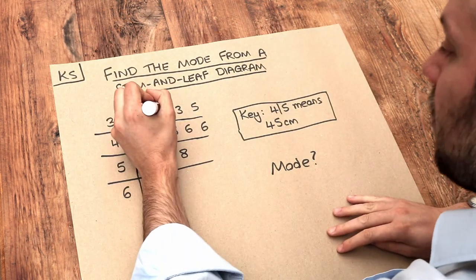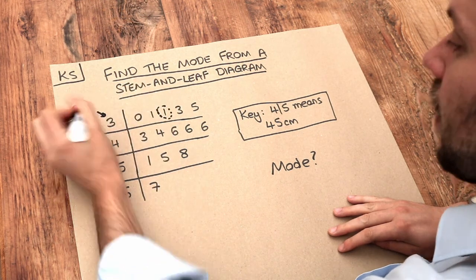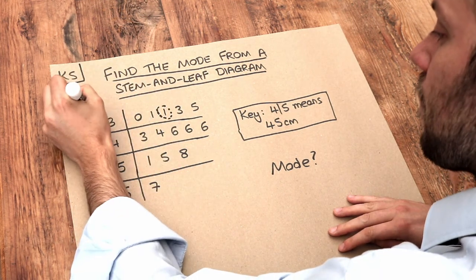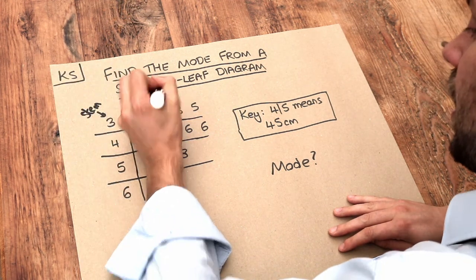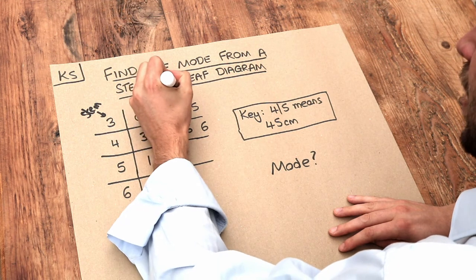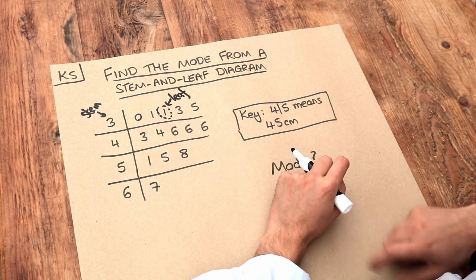If we had a value, say here, remember that this value on the left is the stem, which is the first digit of the number we're interested in, and these numbers over here, they're known as the leaves, and that gives us the second digit of each number.